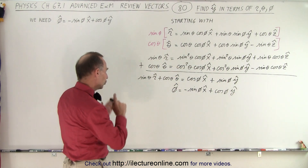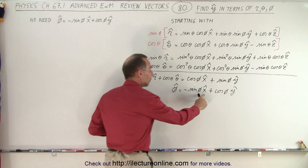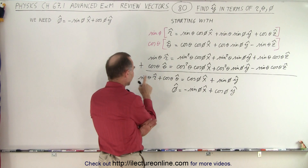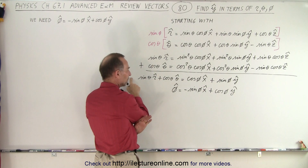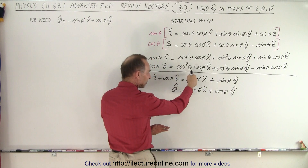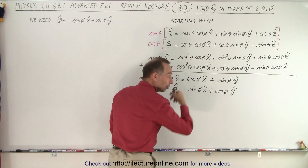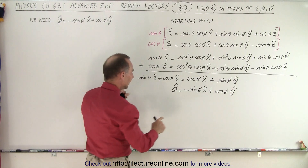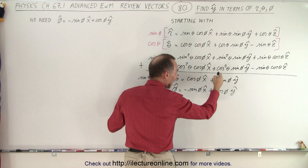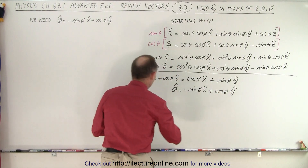Now that we have those two equations, I'm trying to eliminate the x-unit vector and keep the y-unit vector. If I multiply the top equation by sine of phi and the bottom equation by cosine of phi, then I have the exact same x-unit vector terms but one is positive and one is negative. So when I add them together, the x-unit vector will drop out, and I end up with sine squared plus cosine squared of phi, which becomes one.